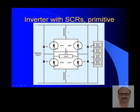Inverter with silicon-controlled rectifiers (SCRs) is primitive technology, used perhaps in the 1960s and 1970s. A serious drawback is commutation: once an SCR conducts under DC conditions, it continues to conduct. Commutation must be managed by a capacitor, and careful selection of this capacitor is critical for inverter applications.